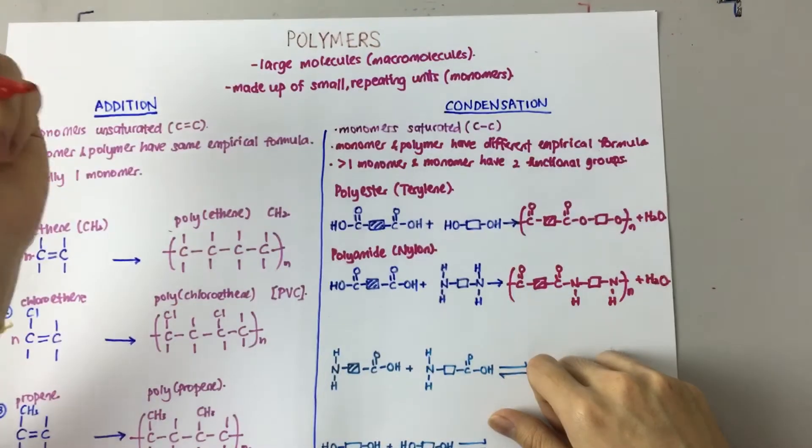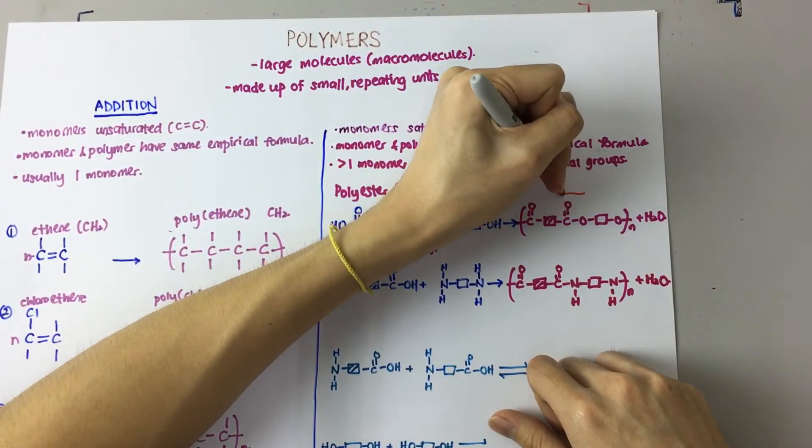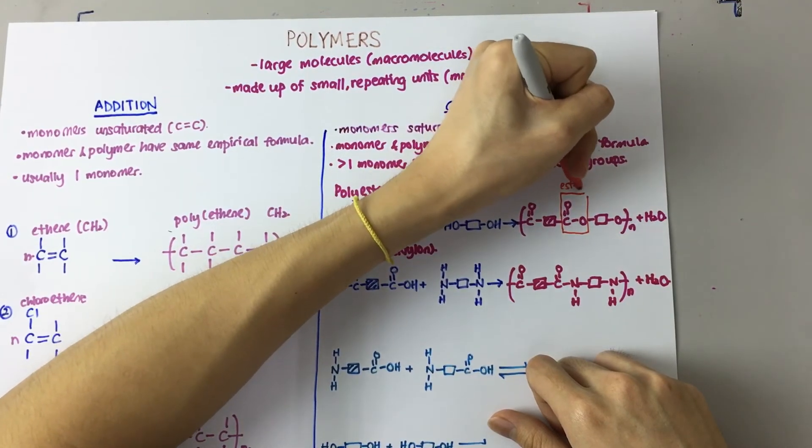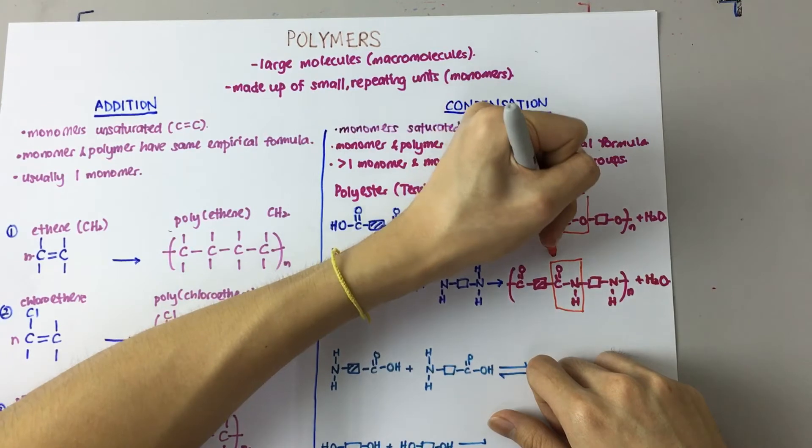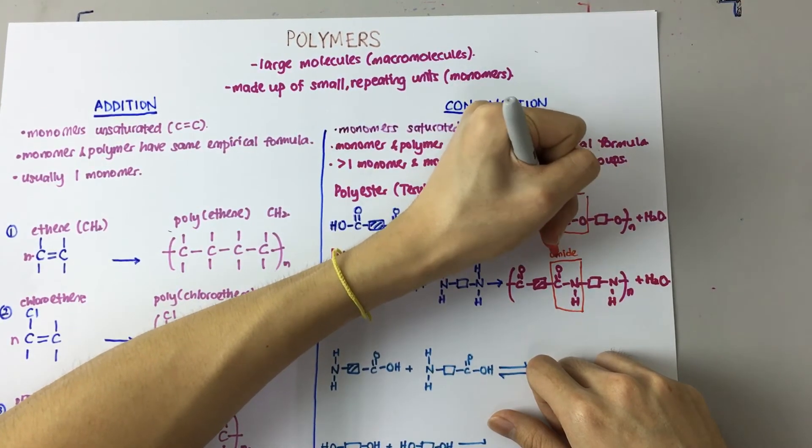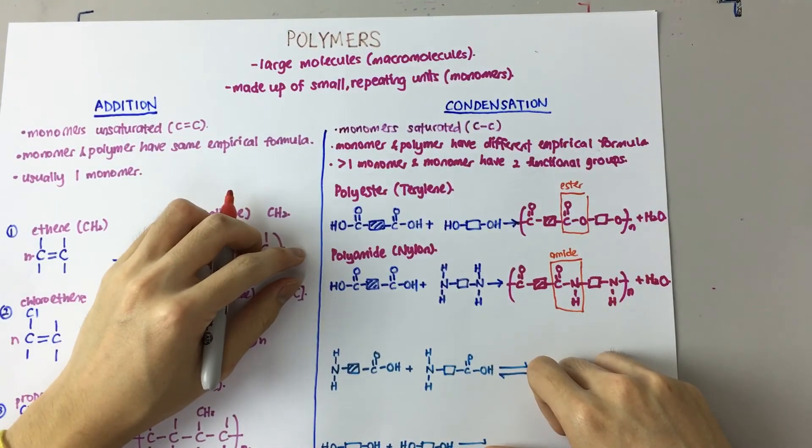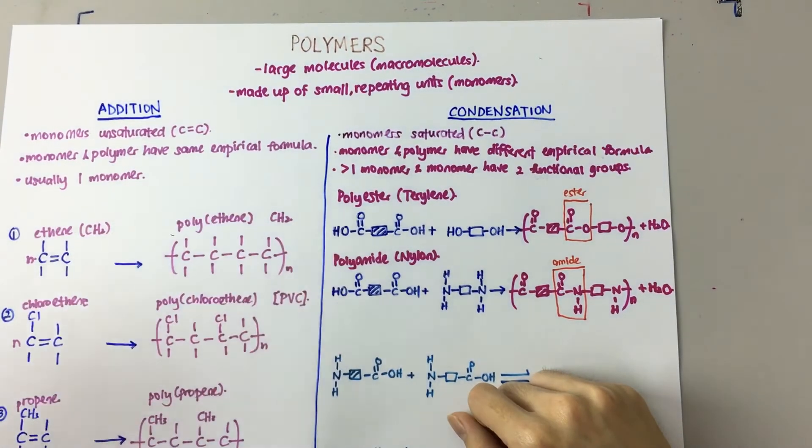In a polyester, the linkage here is an ester linkage. And in a polyamide, the linkage here is an amide linkage. Alright, so those were the synthetic polymers that we looked at.